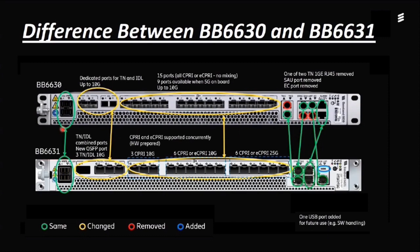In the telecom sector, minus 48V DC is the standard. A few equipment types support direct AC current, but most equipment used in the telecom sector does not support AC power directly. If AC is provided, there would be a converter to convert from AC to DC power. So we give only DC power, which is minus 48 volts.